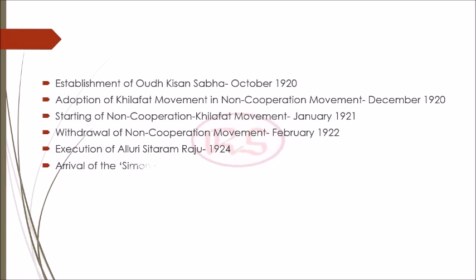Then in 1928 came the Simon Commission. The Simon Commission arrived in India in 1928 and was greeted by the slogan 'Simon Go Back.' Then in October 1929, Dominion Status was offered to India by Lord Irwin — for an unspecified future date.